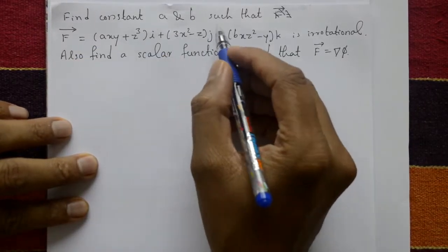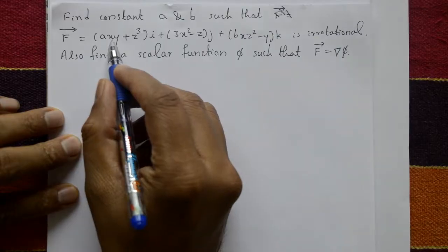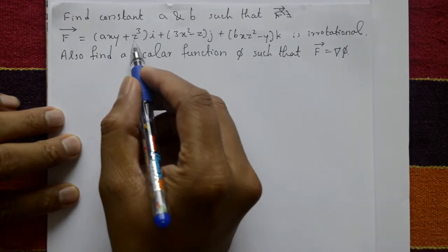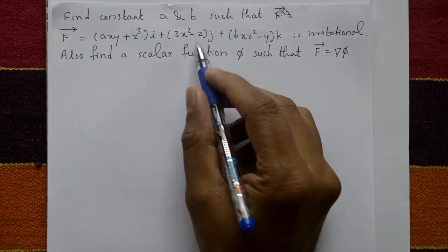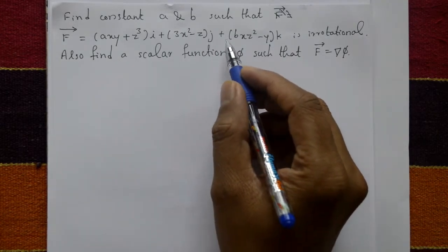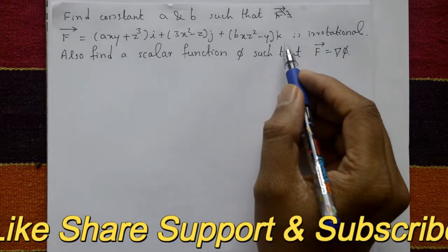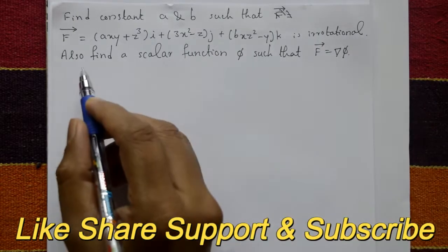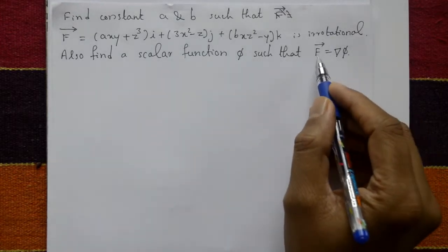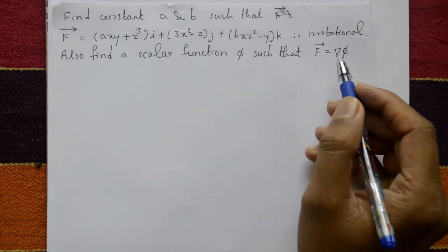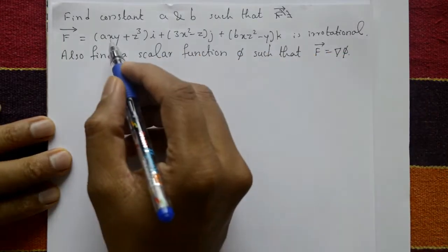Find constants a and b such that vector F equals (axy + z³)i plus (3x² - z)j plus (bxz² - y)k is irrotational. Also find a scalar function φ such that vector F equals del φ. First, to show that F is irrotational, we need to find the values of a and b.